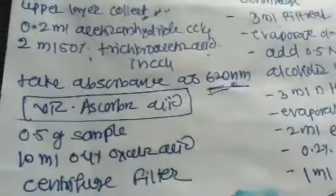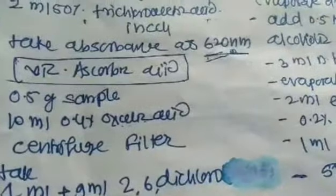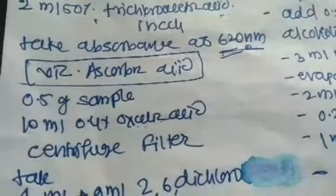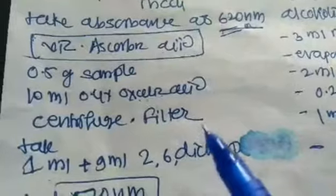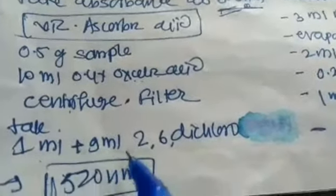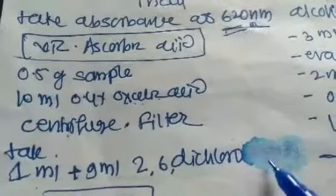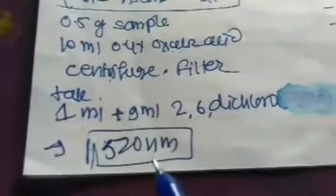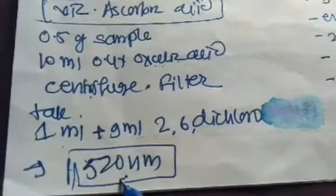For determination of vitamin C, we estimate it using oxalic acid. Take 0.5 gram of sample plus 10 ml of 0.4% oxalic acid, centrifuge and filter it. Then take 1 ml of this filtrate and add 9 ml of 2,6-dichlorophenolindophenol and check the absorbance at 520 nanometers.